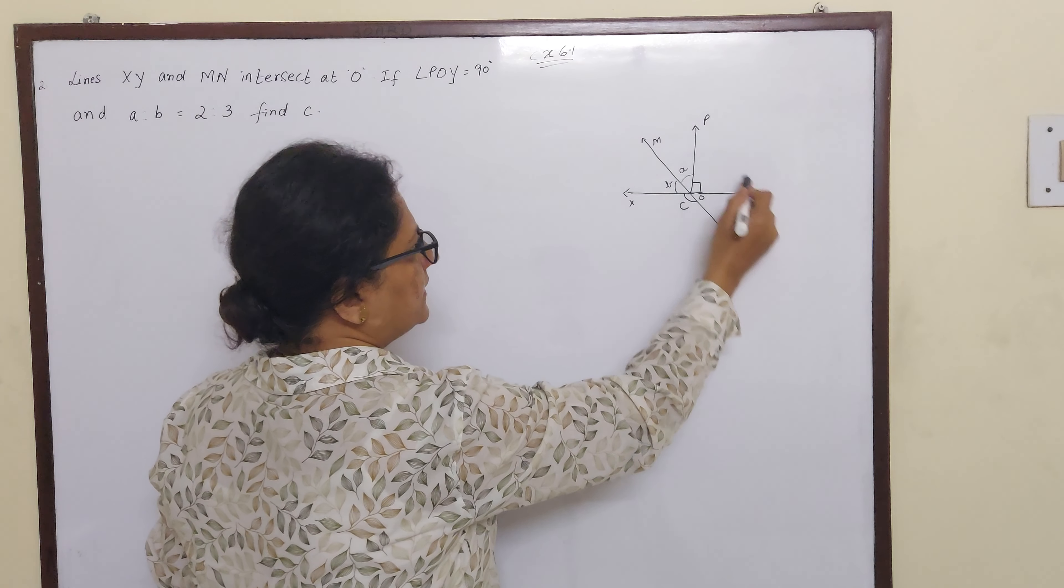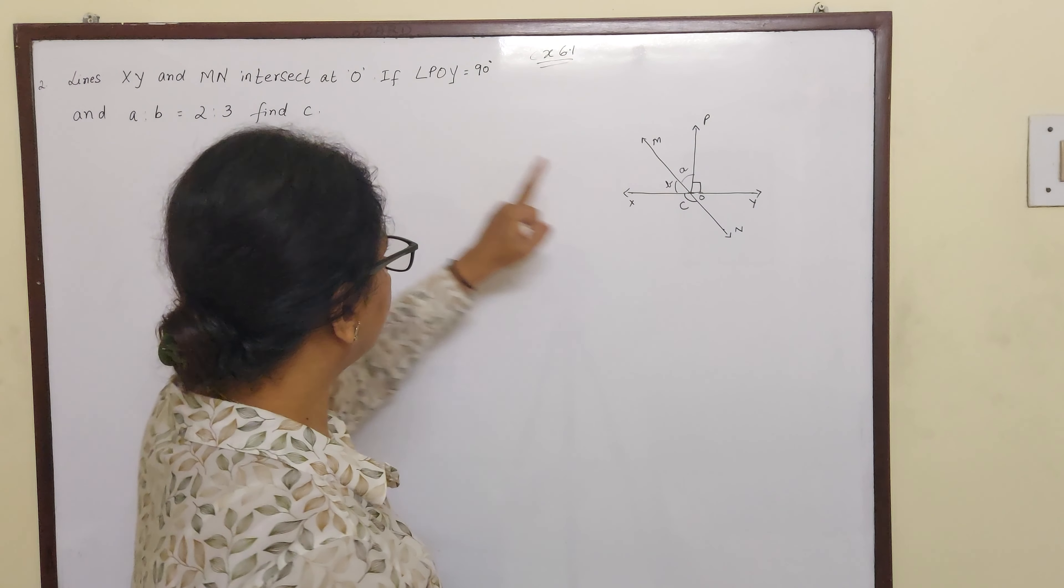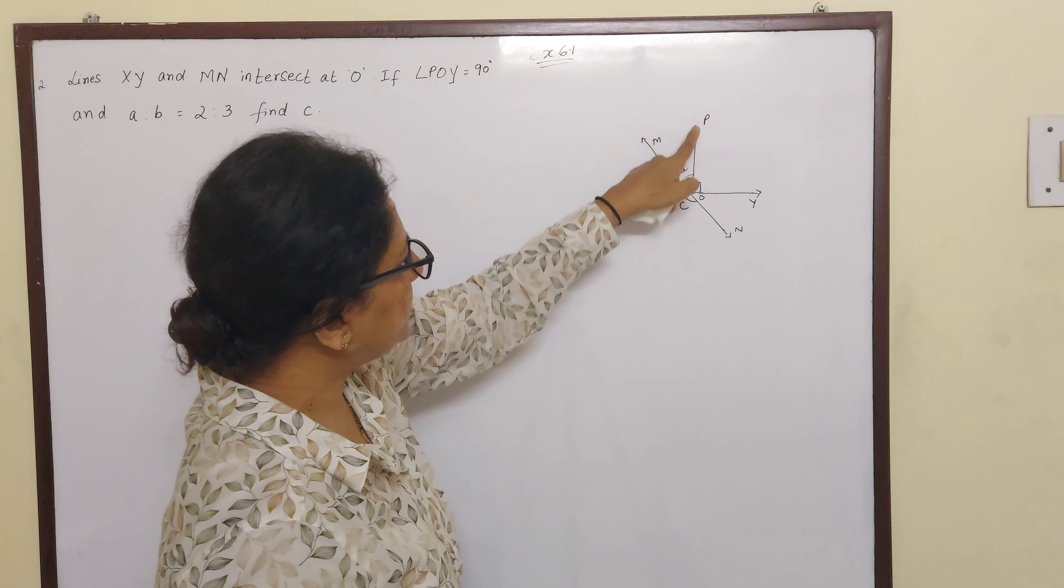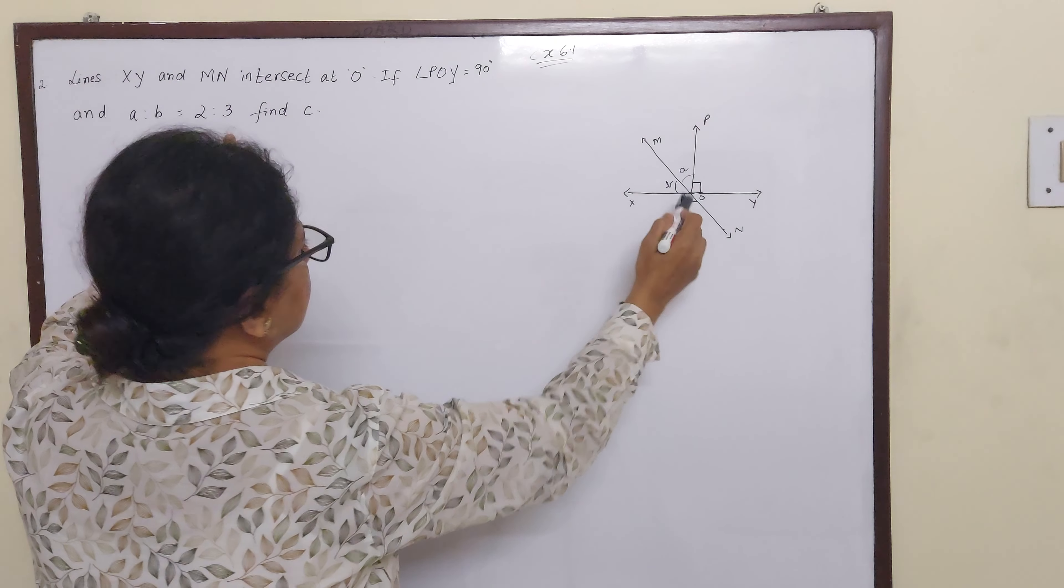So this is a line XY and this is a line MN and they intersect at O. If angle POY is 90 degrees, so this is your 90 degrees, and A to B is 2 to 3 ratio, then find C.